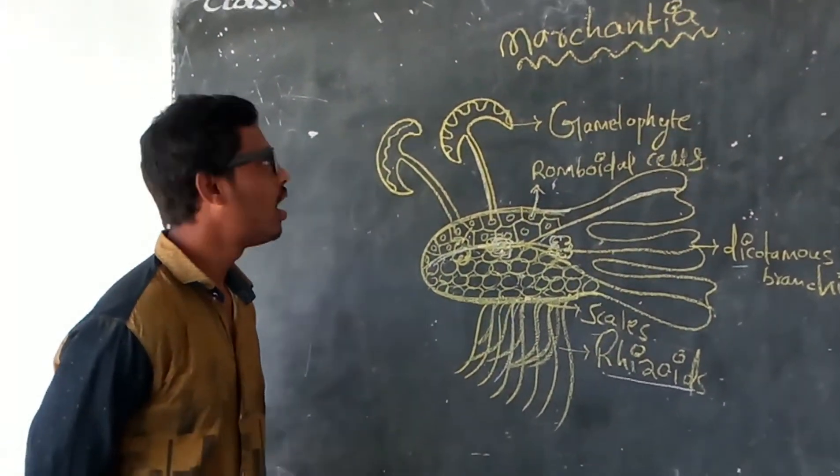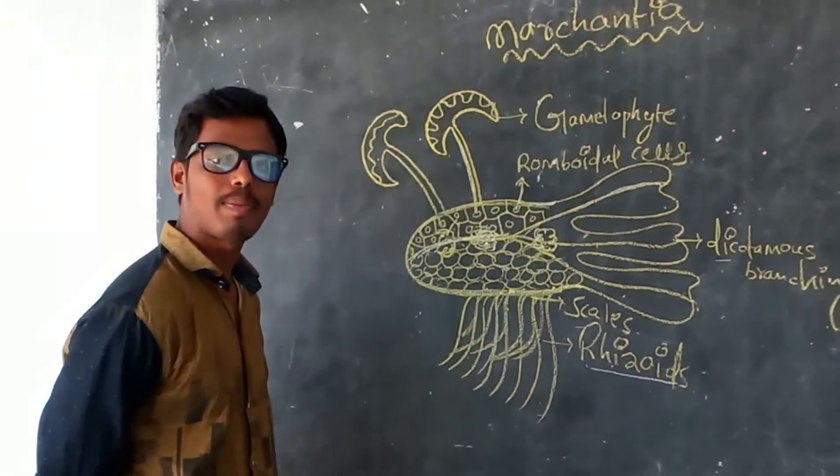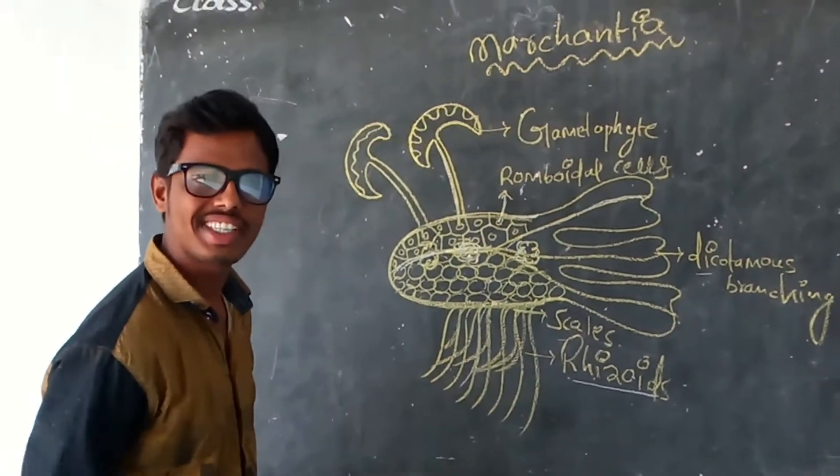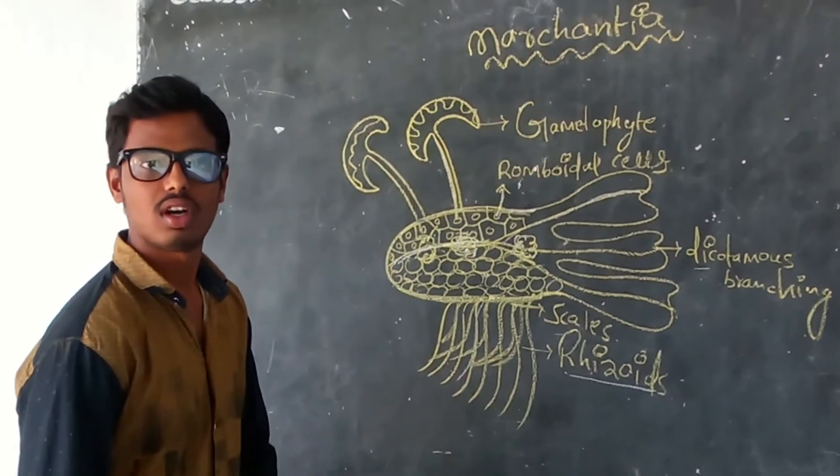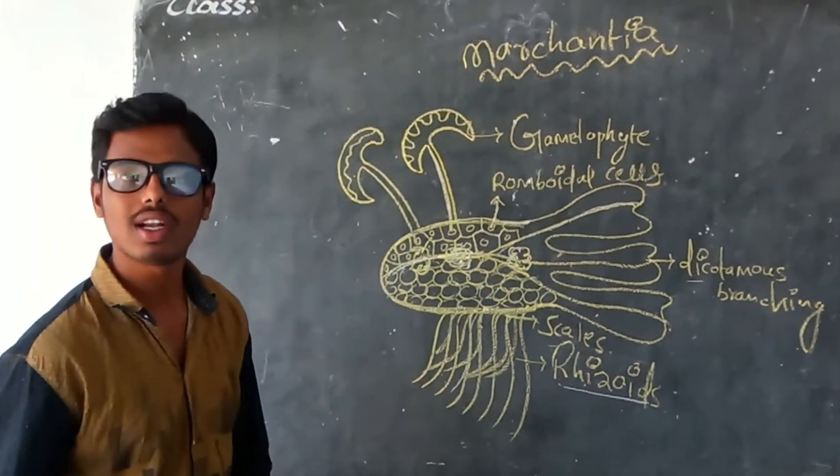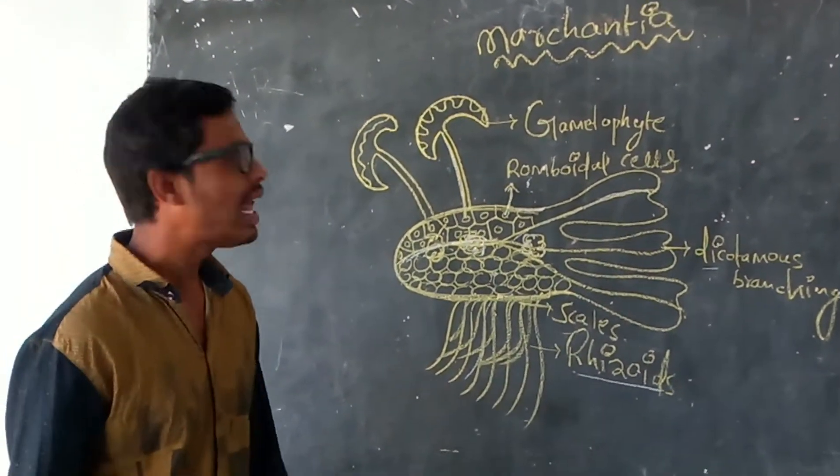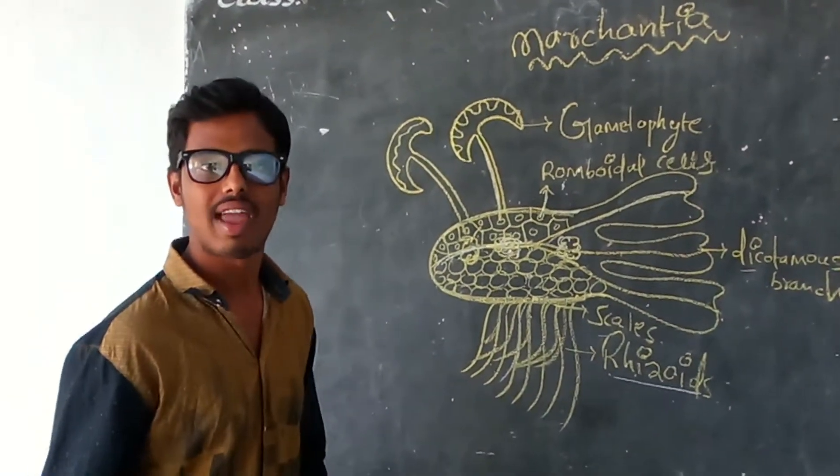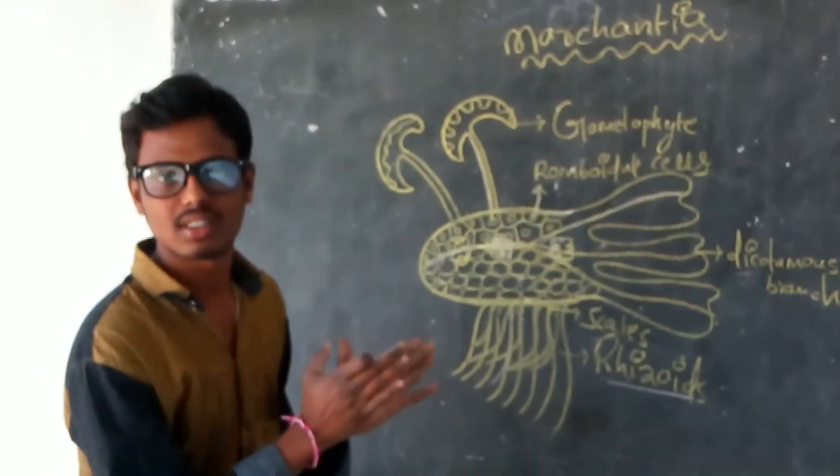Today we are going to explain about Marchantia. Marchantia is a liverwort. When we call it liverwort, the liver-shaped lobes are present in the thallus. Hence it is called liverwort. So Marchantia is a liverwort.